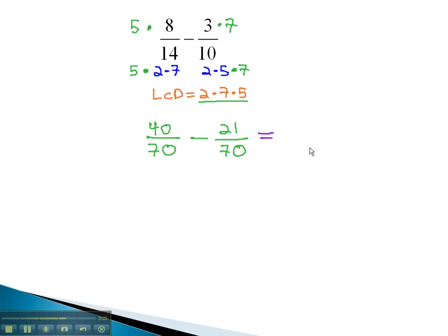We now have a common denominator, so we can subtract 40 minus 21 to get 19 over 70.